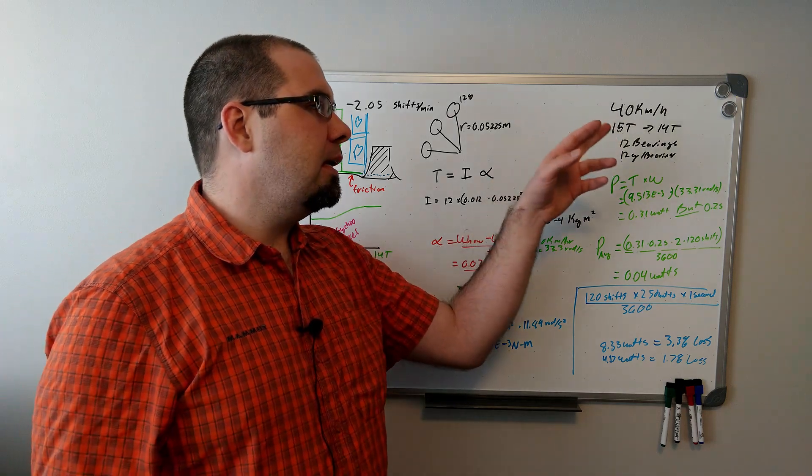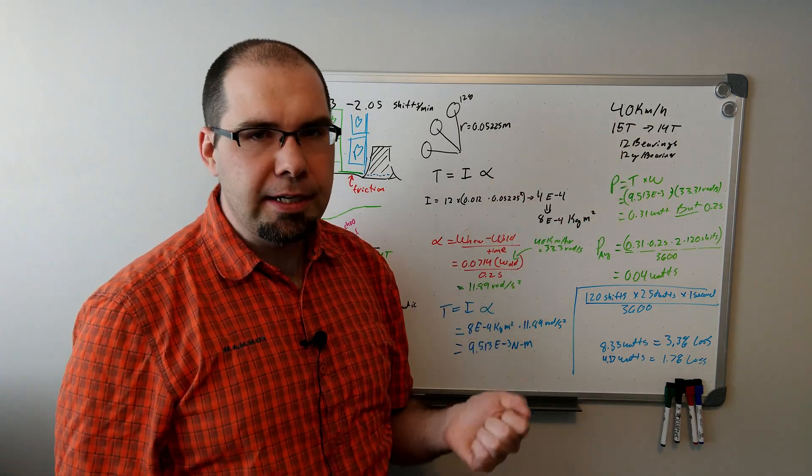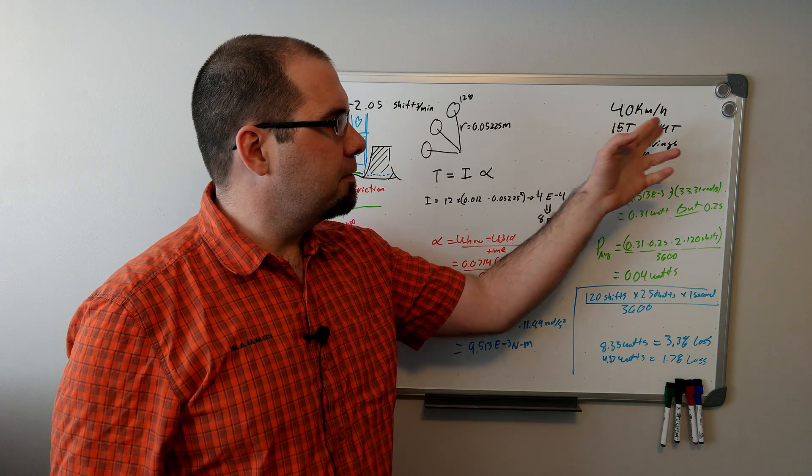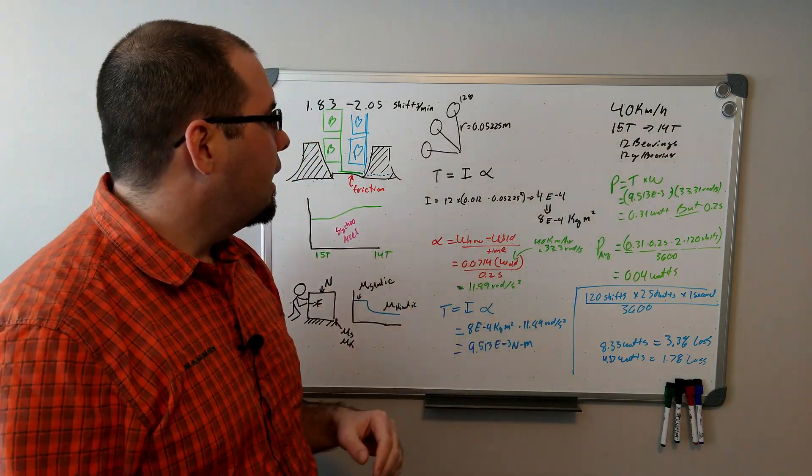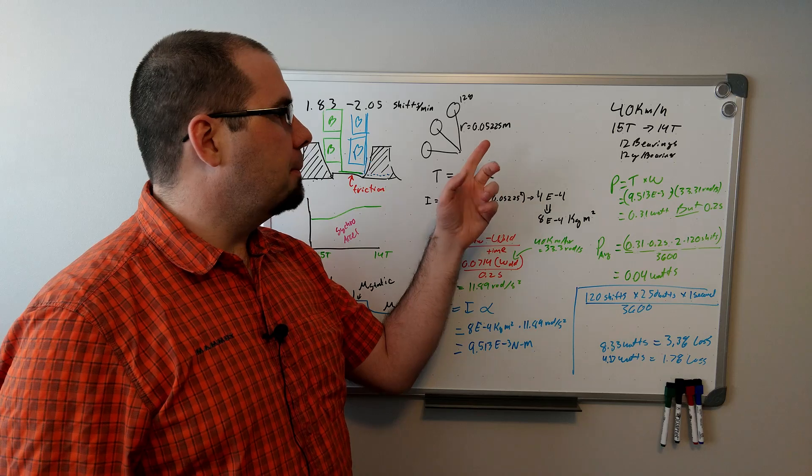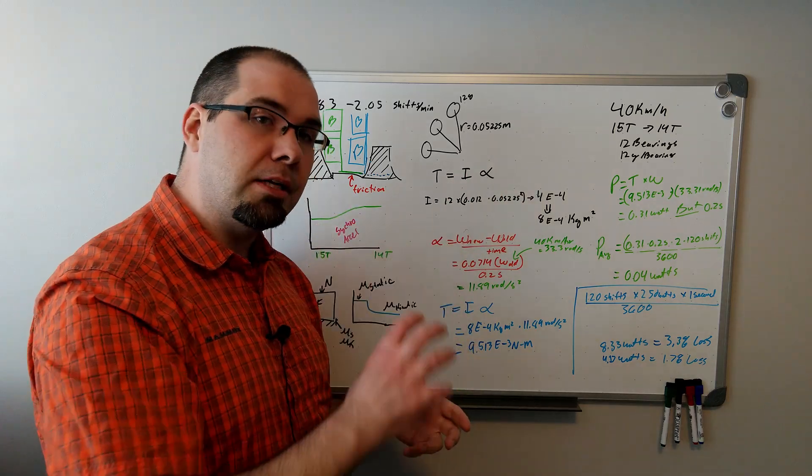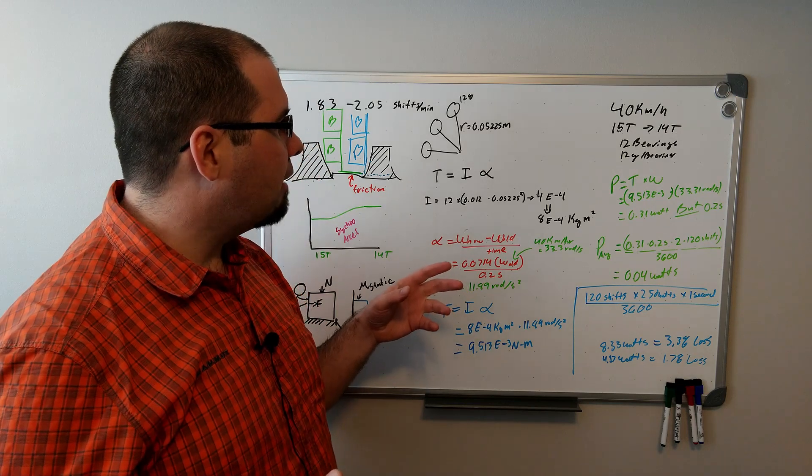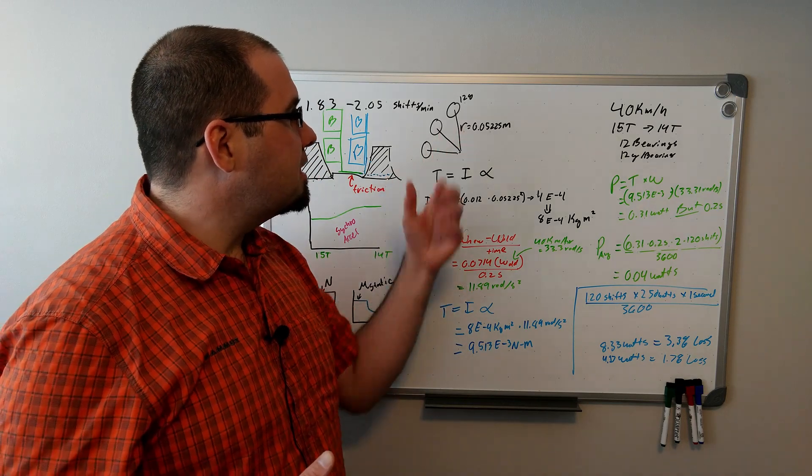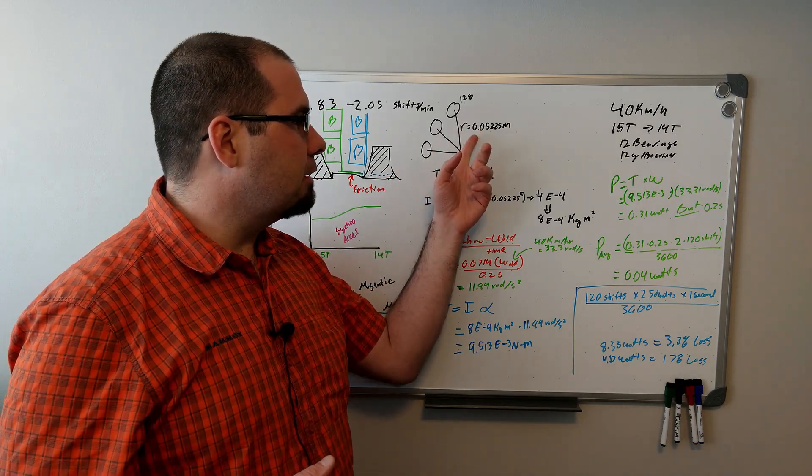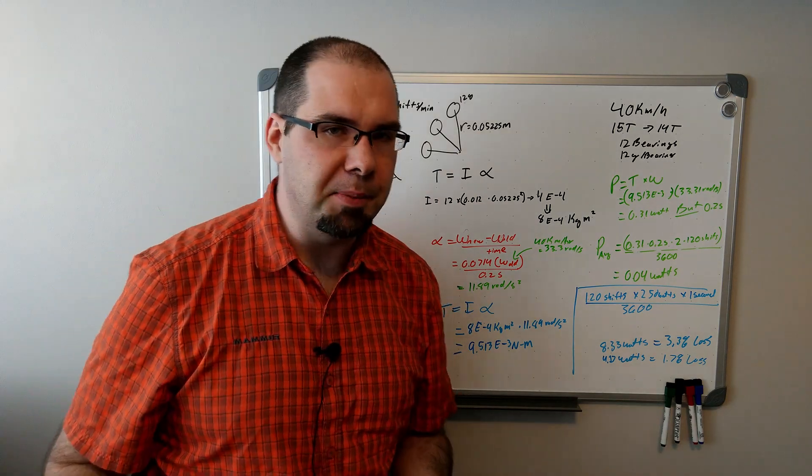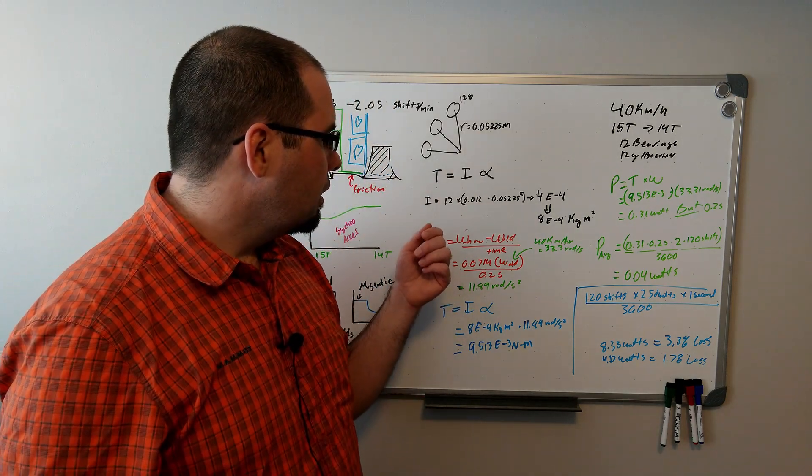40 kilometers an hour again, 12 bearings, 12 grams of bearing, chosen 15 to 14 teeth, and I mathed out for some of the stuff because we need some gaps, some meat on those, the gear that's on the wheel, we need to have some spacing between them, and that resulted in a radius of about 5 centimeters.